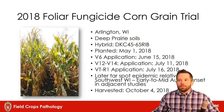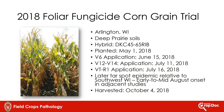Here's some data from a corn grain trial at Arlington, Wisconsin. We planted the hybrid DKC 45-65 RIB on the 1st of May. We had application timings ranging from V6, to V12 to V14, and then VT/R1 applications. We did have a later tar spot epidemic that moved in in August, later than in the Montfort trial, and we harvested on October 4th, 2018.